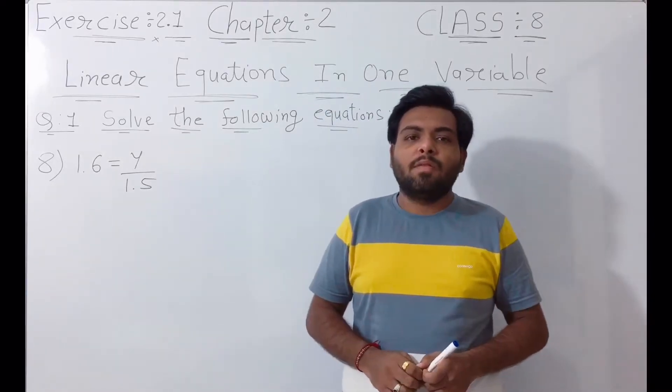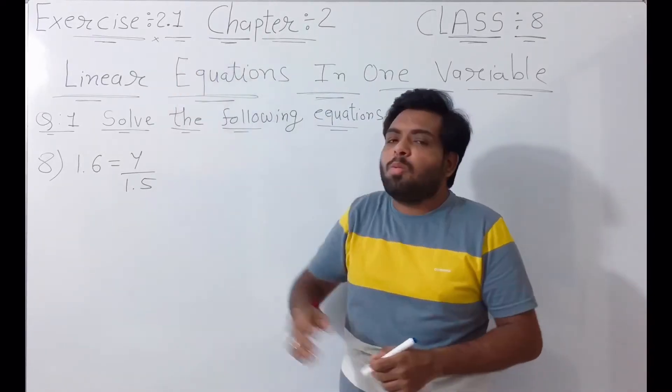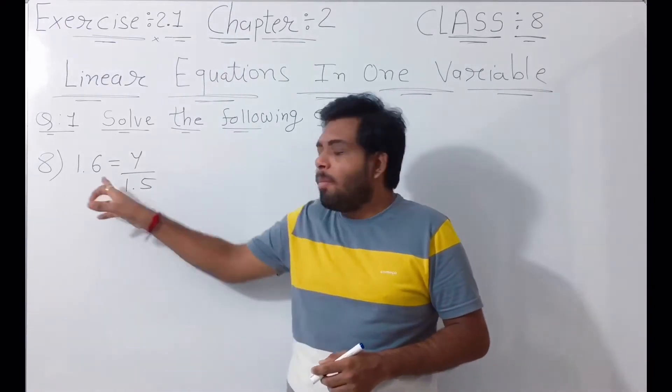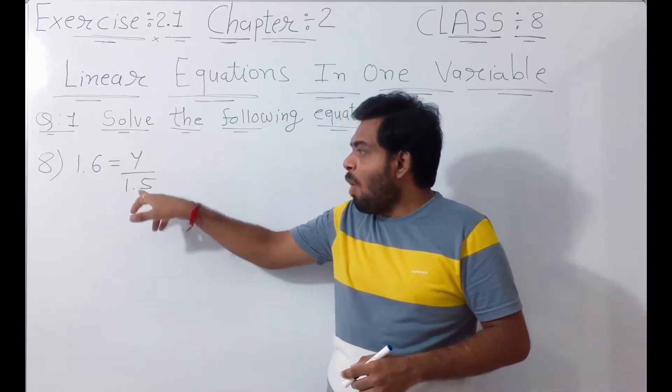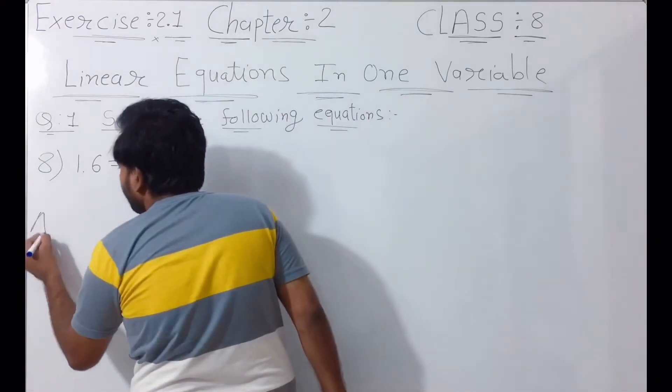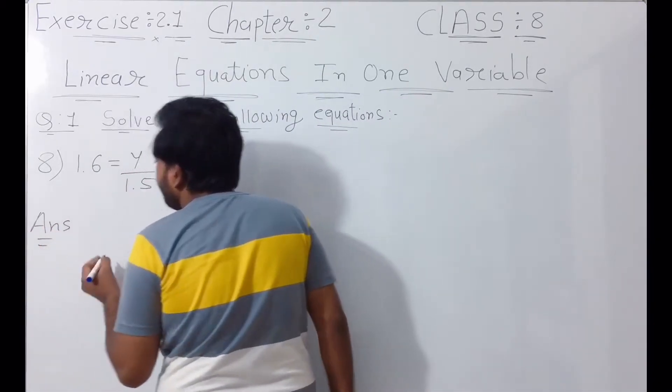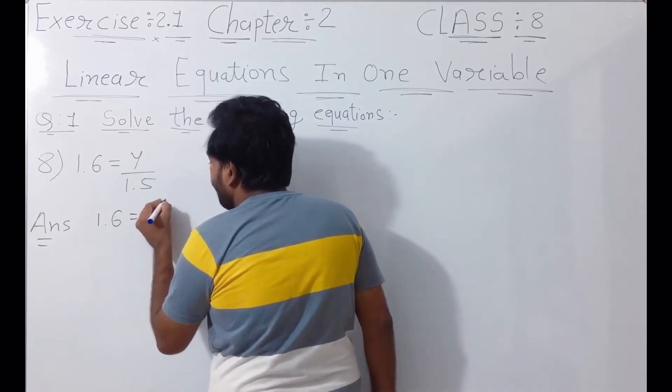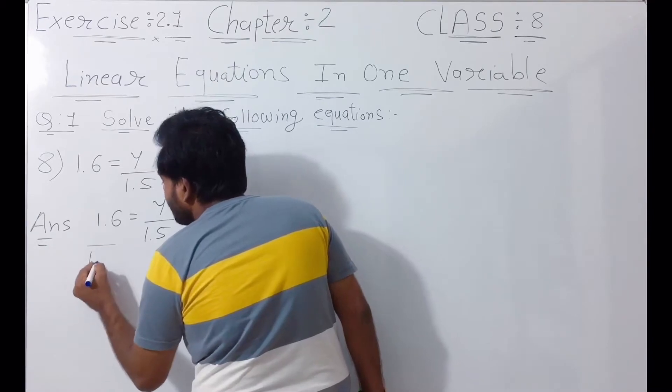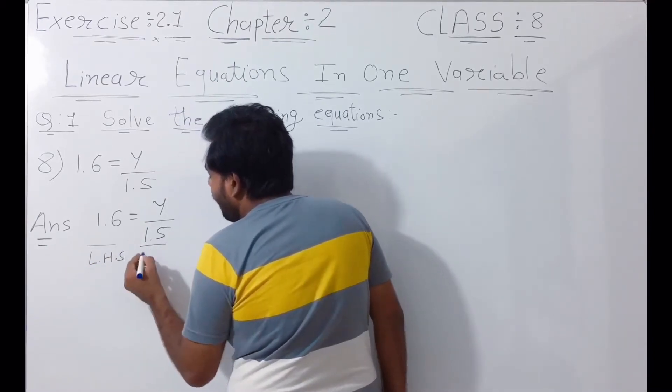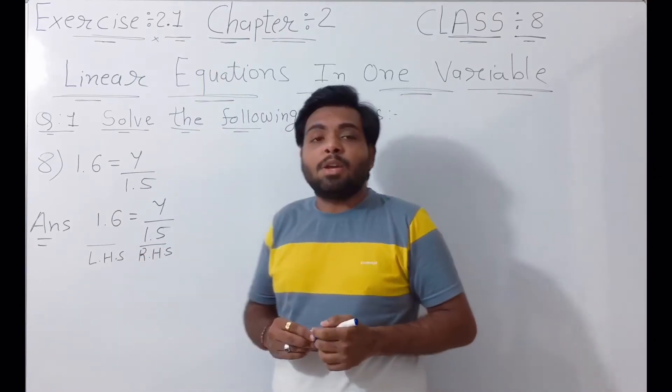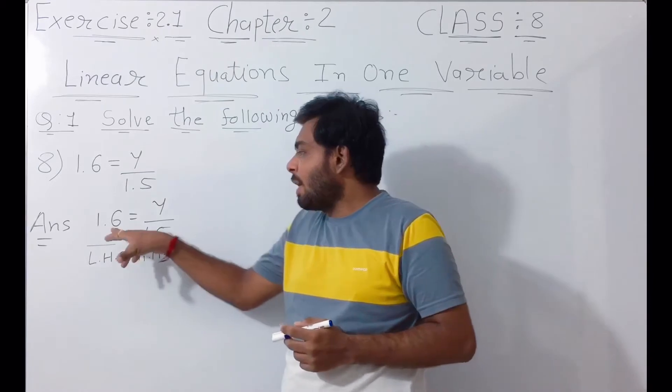Hello everyone, today we solve Exercise number 2.1, question number 1. Solve the following equations, example number 8: 1.6 is equal to y upon 1.5. So here 1.6 is at left hand side and y upon 1.5 is at right hand side.